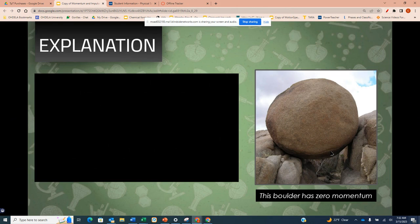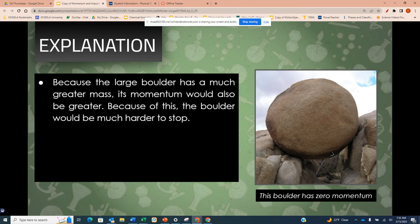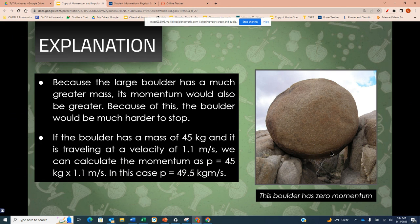This boulder sitting still has zero momentum. Because the large boulder has a much greater mass, its momentum would also be greater. Because of this, the boulder would be much harder to stop. If the boulder has a mass of 45 kilograms and is traveling at a velocity of 1.1 meters per second, we can calculate the momentum as p equals 45 kilograms times 1.1 meters per second. In this case, p would equal 49.5 kilogram meters per second.